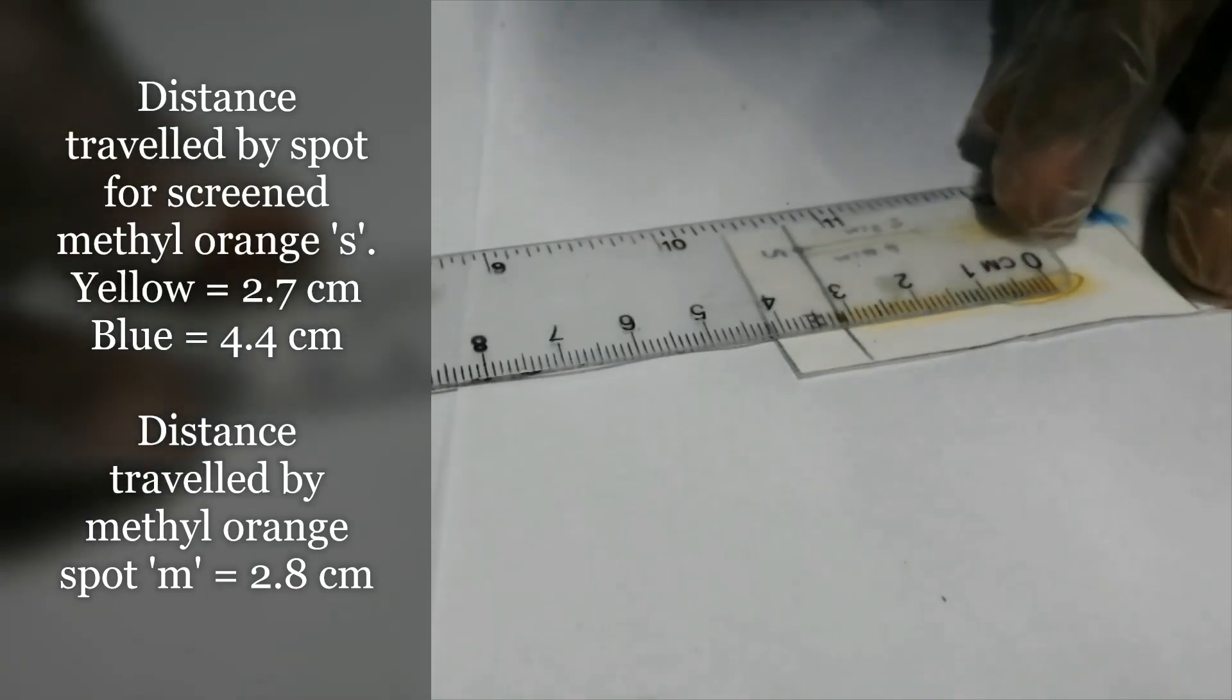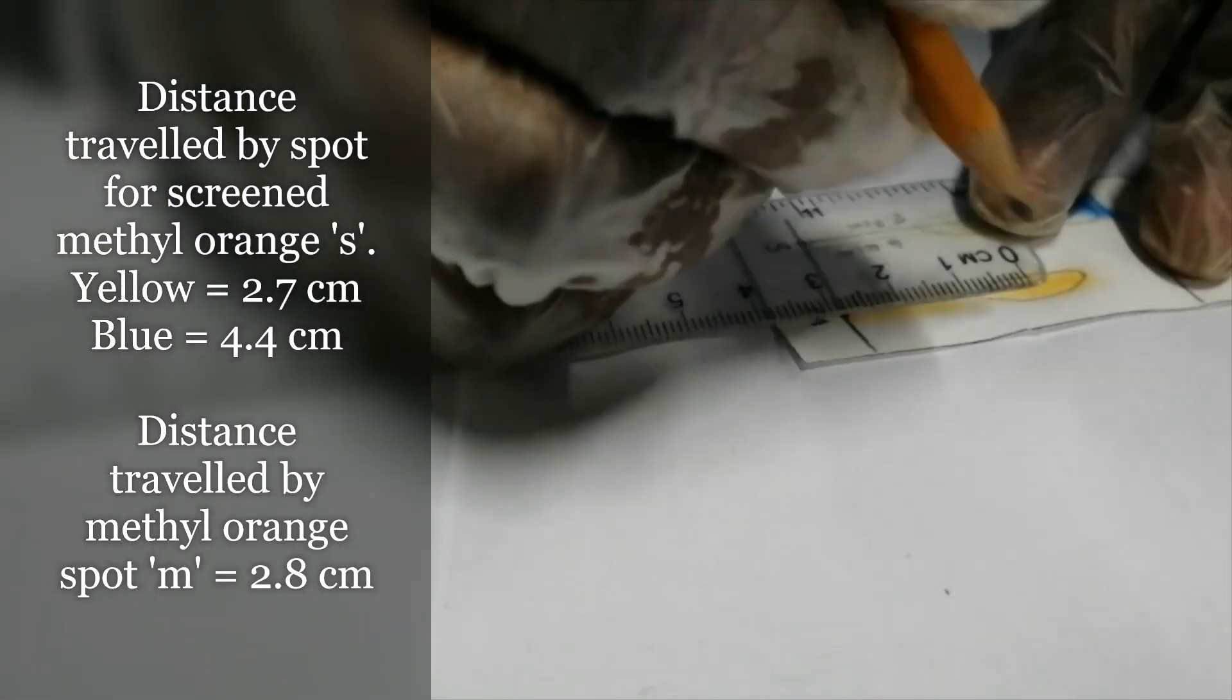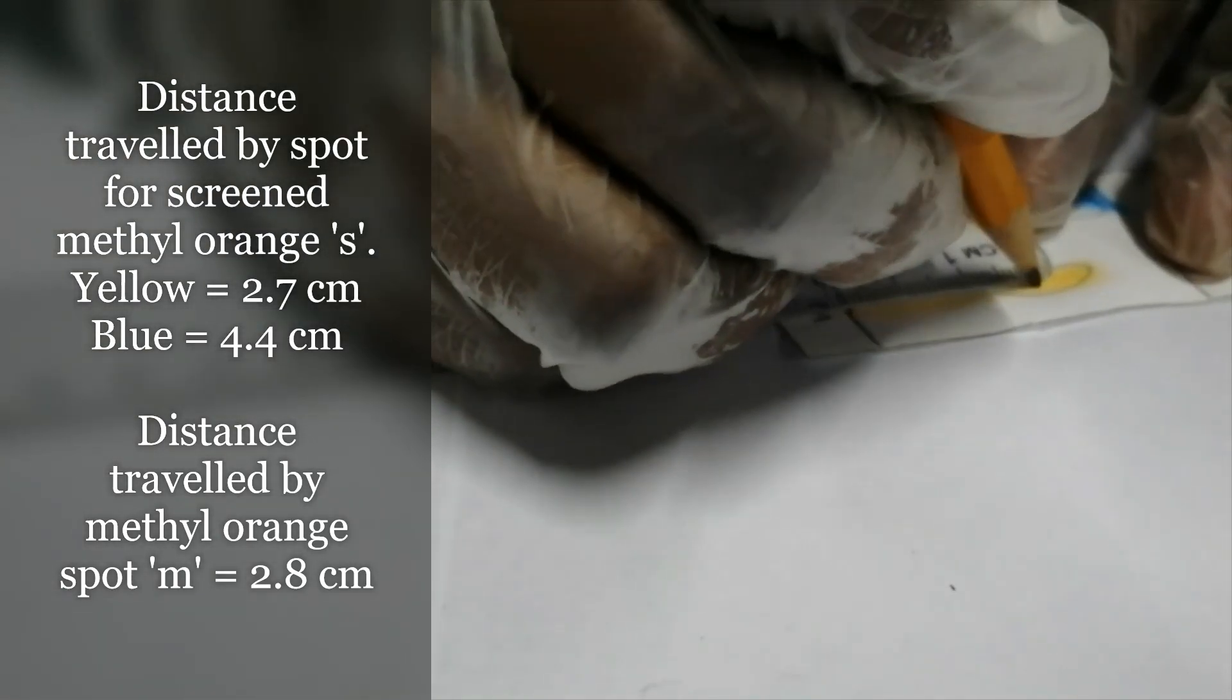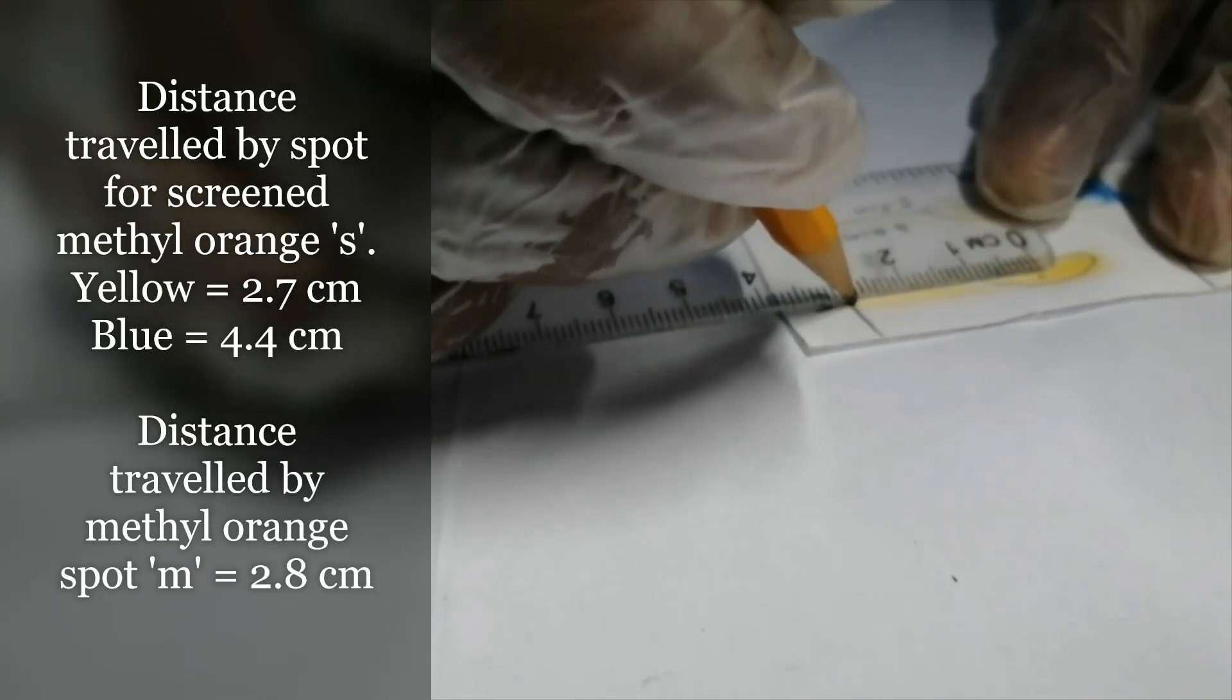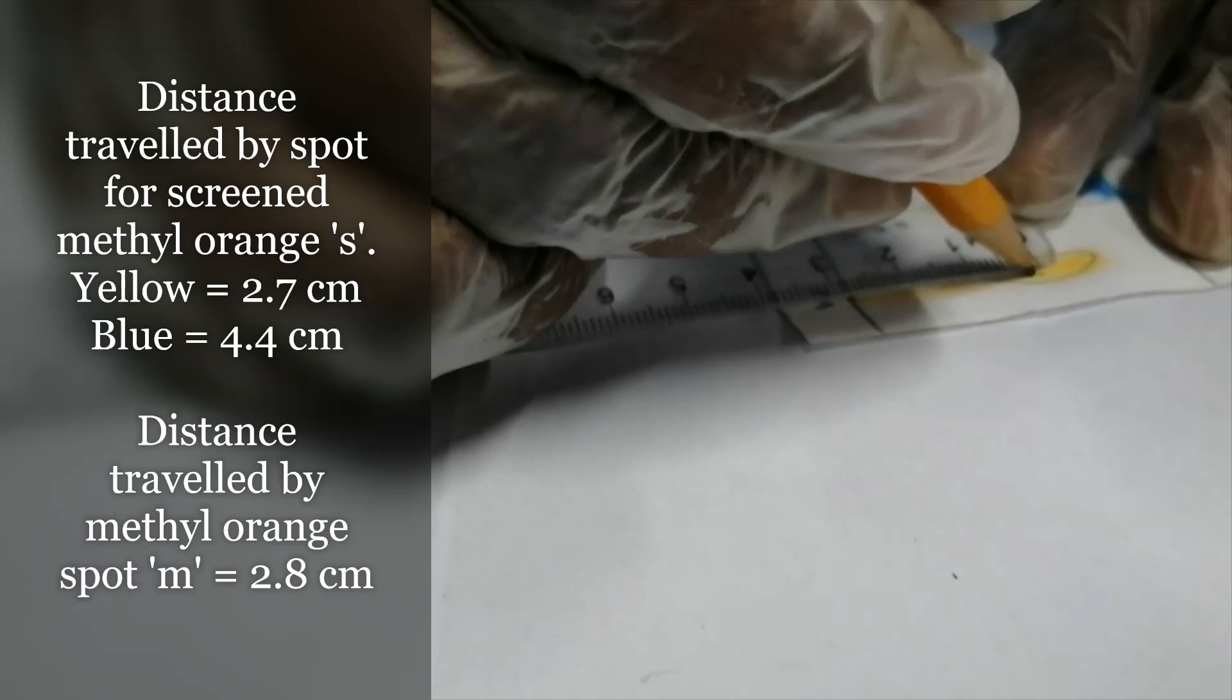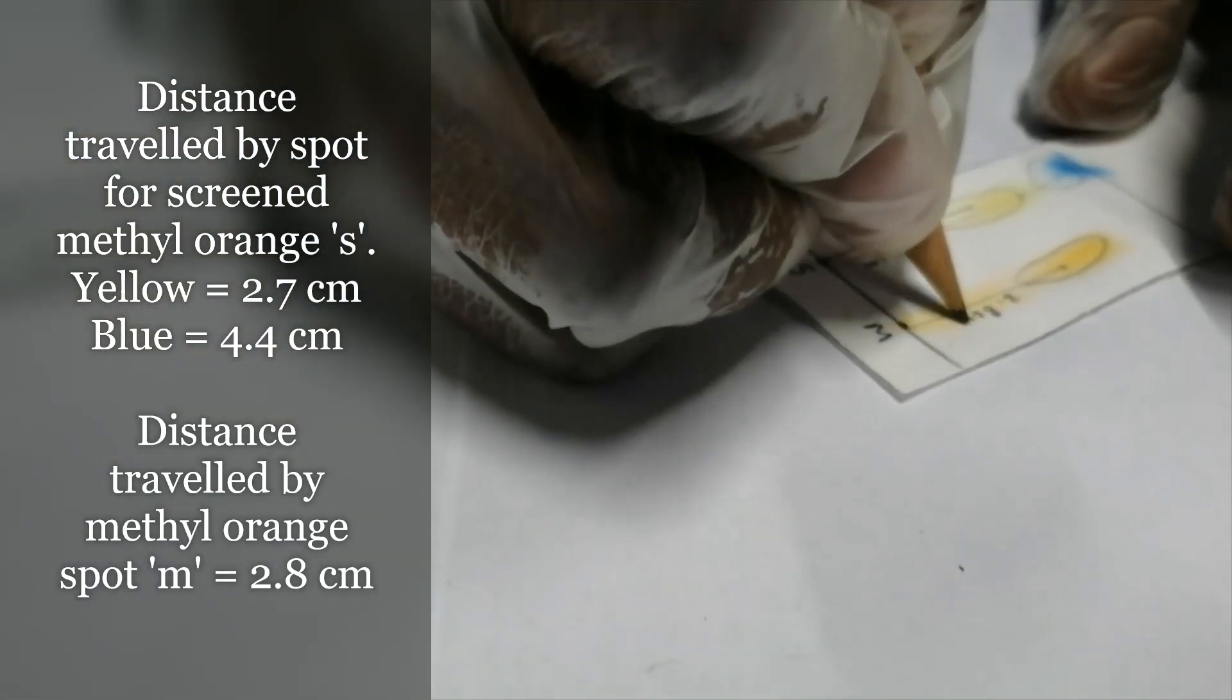For the methyl orange, the center of that streak appears to be here. The distance would be about 2.8 centimeters based on where I decided my center is.